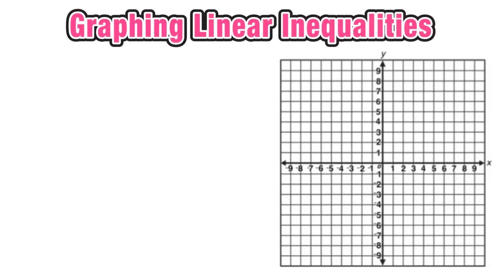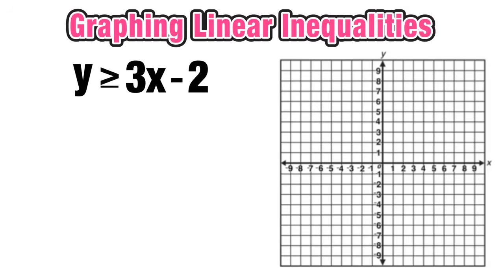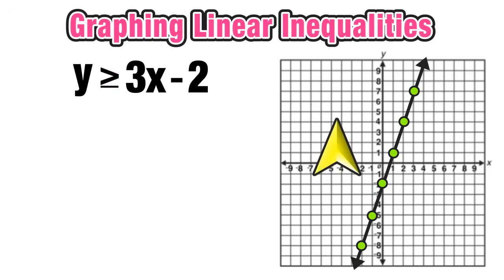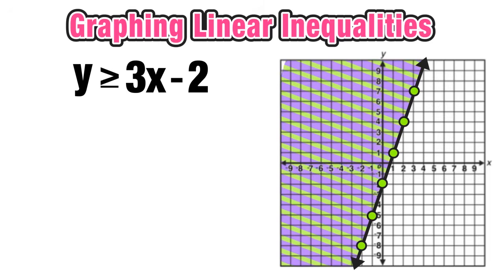Now for our first example: the linear inequality y is greater than or equal to 3x minus 2. We graph this like a linear equation, starting at the y-intercept of negative 2 and using the slope to build the line. Since the symbol is greater than or equal to, the line is solid, and we shade the entire region above the line. That gives us the completed graph of this linear inequality.